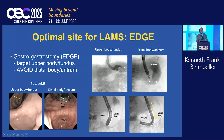For the EDGE procedure, it's critical to identify the optimal site for LAMS placement. You should target the upper body and the fundus — you'll run into problems if you target the distal body or the antrum. On fluoroscopy, you want your echoendoscope angled towards the fundus, not angled down towards the distal body or the antrum. When you later pass your duodenoscope, you'll have a sharp angle if you entered too distal.